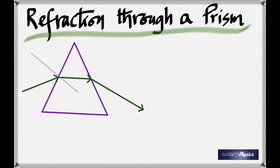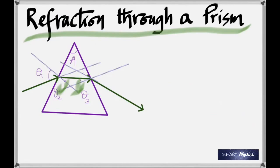For the prism, I'm drawing two perpendiculars to the surfaces. This is the angle of incidence — theta 1, theta 2, theta 3, and the outer angle is theta 4. That is the angle of the prism, A, and this is the angle of deviation, D. Did the two bendings take place in the same direction? Yes — it bent going into the prism and bent again coming out, both in the same direction. So D is the total bending — the angle between the extended incident ray and the emergent ray.